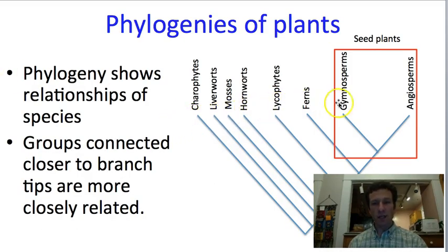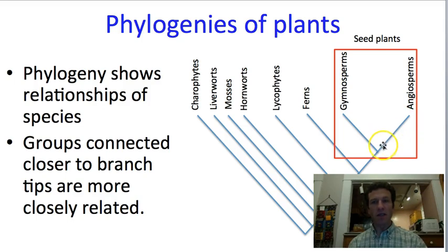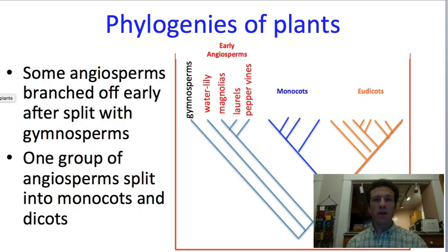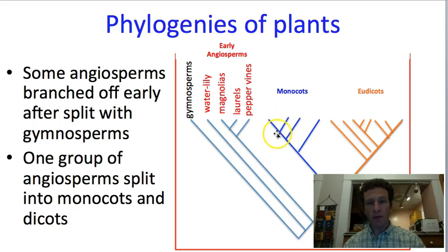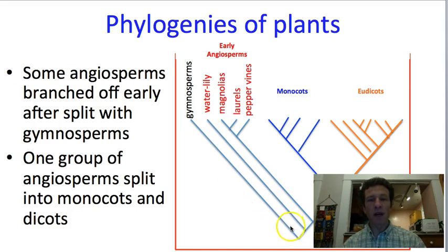Here are all of those groups. I'll just point out that the gymnosperms are the closest relative of the angiosperms. What we're going to do now is dive into this branch — of course, this branch isn't one species; it's at least hundreds of thousands of species. So we're going to look more closely at relationships within the angiosperms. Remember that when we read phylogenies, things connected closer to the top are more closely related, and things connected closer to the bottom are more distantly related.